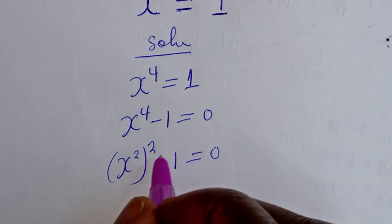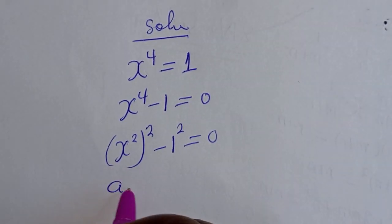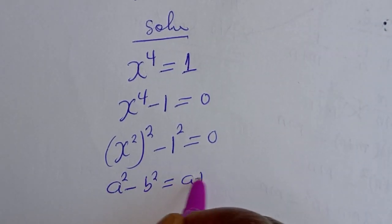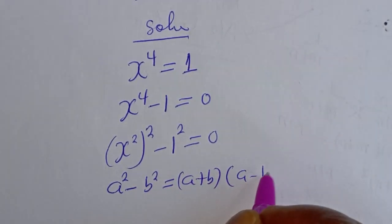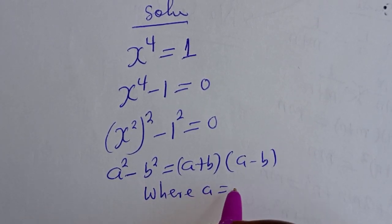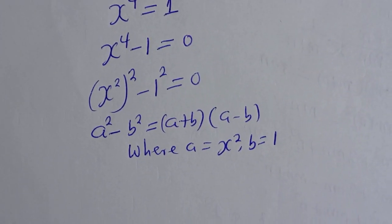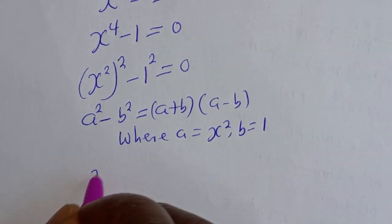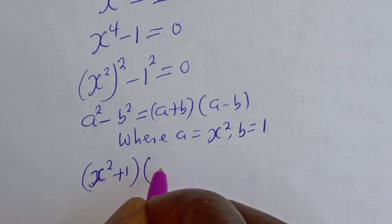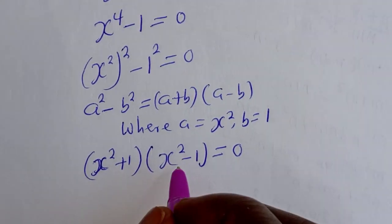This is in the form of a perfect square. If you have A squared minus B squared, this is equal to (A plus B)(A minus B), where A is equal to S squared and B is equal to 1. So this gives us (S squared plus 1)(S squared minus 1) is equal to 0.